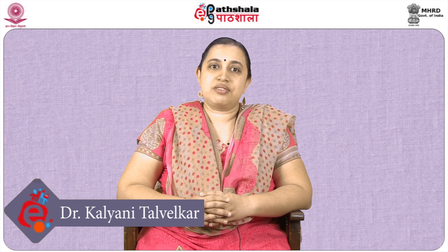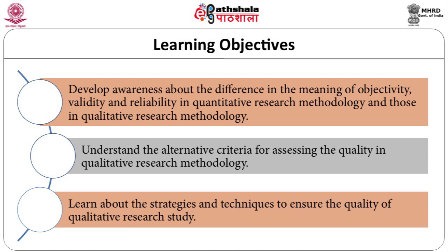Let us look at the fifth module in qualitative research methods, which is Module 26: Objectivity, Validity and Reliability in Qualitative Research. At the end of this module, the student will develop awareness about the difference in the meaning of objectivity, validity and reliability in quantitative research methodology and those in qualitative research methodology, understand the alternative criteria for assessing quality in qualitative research, and learn about the strategies and techniques to ensure the quality of a qualitative research study.